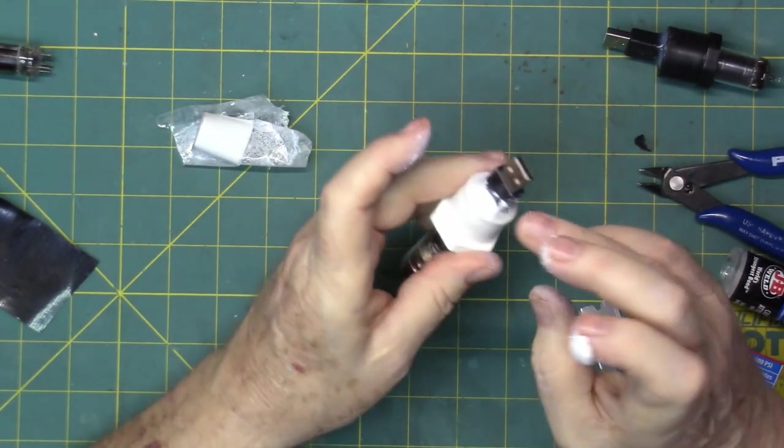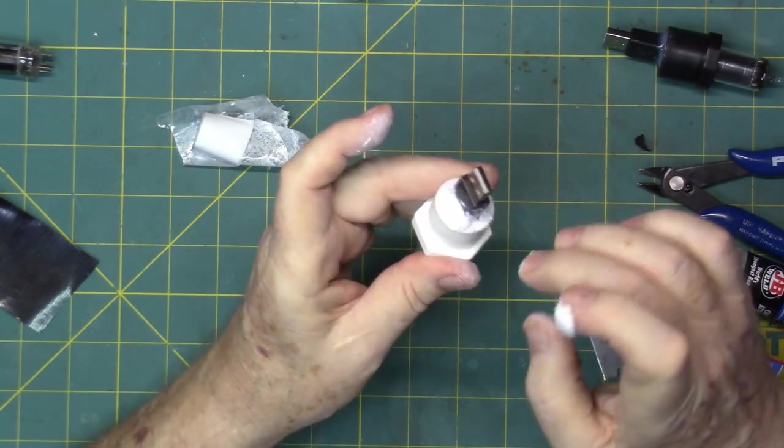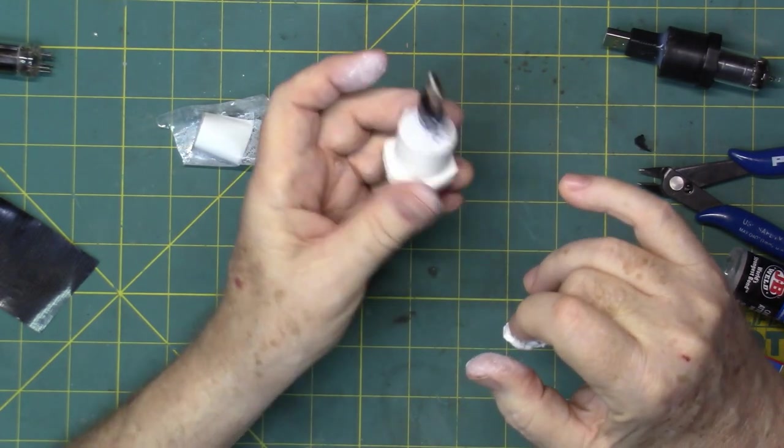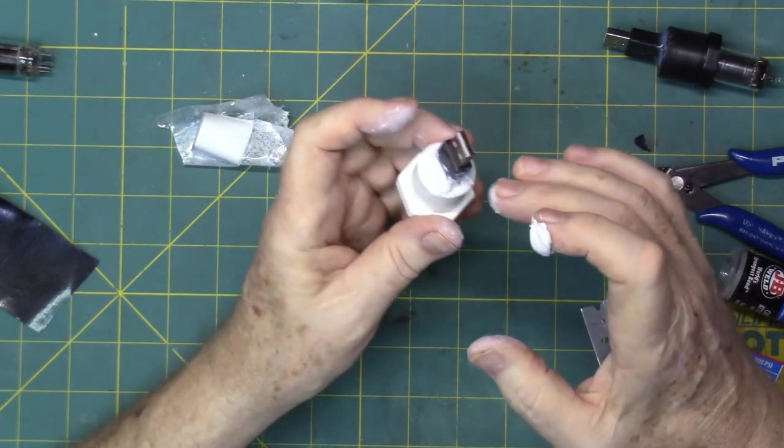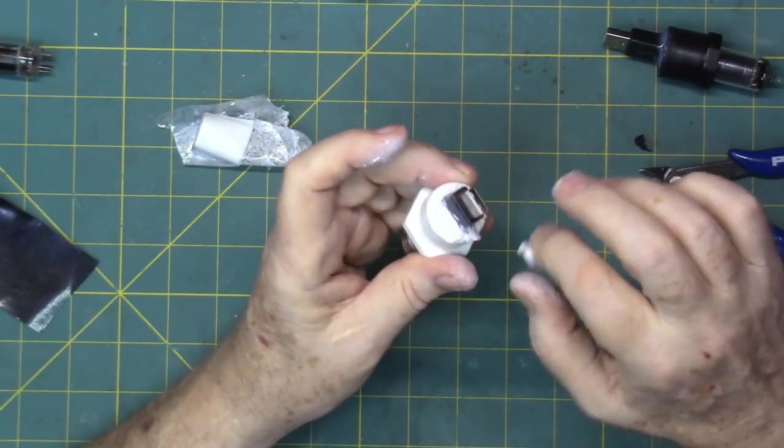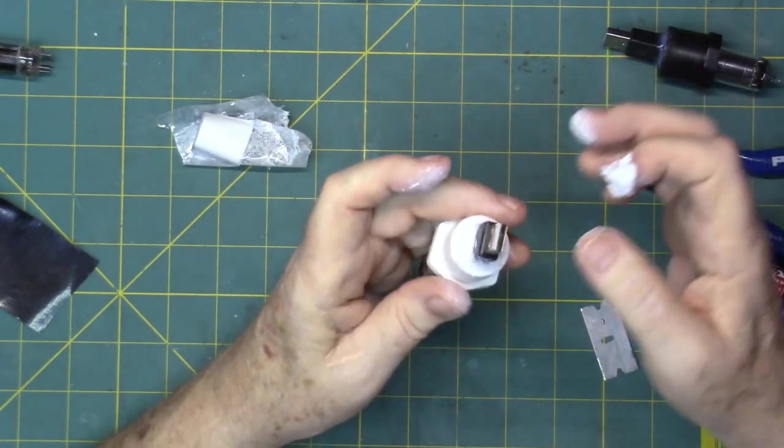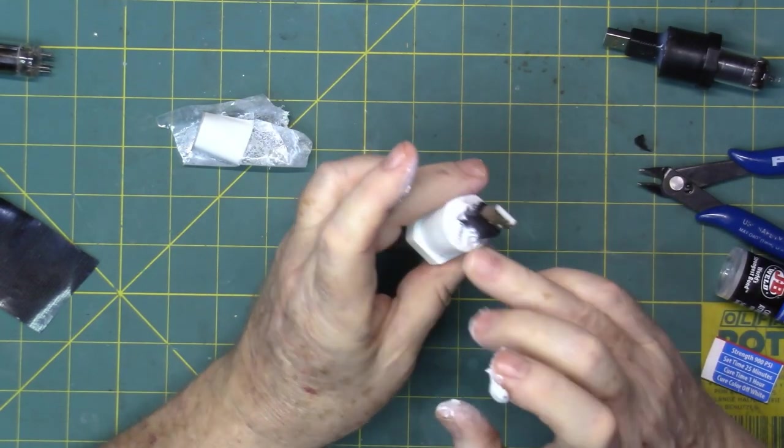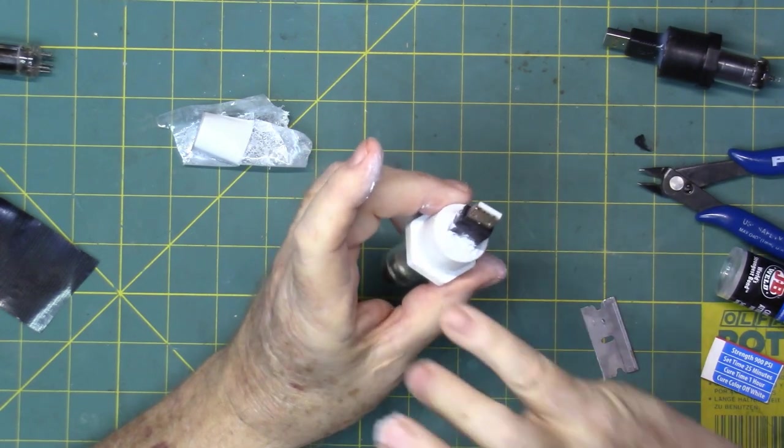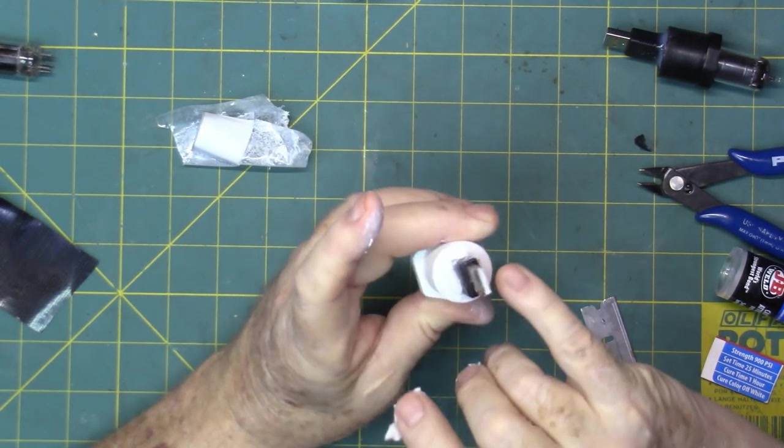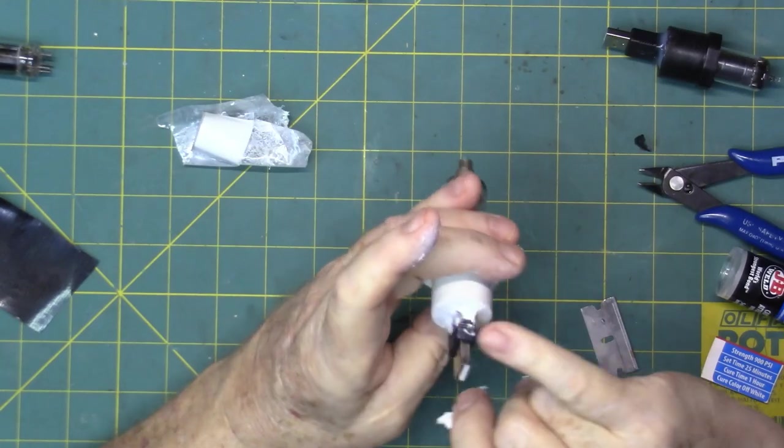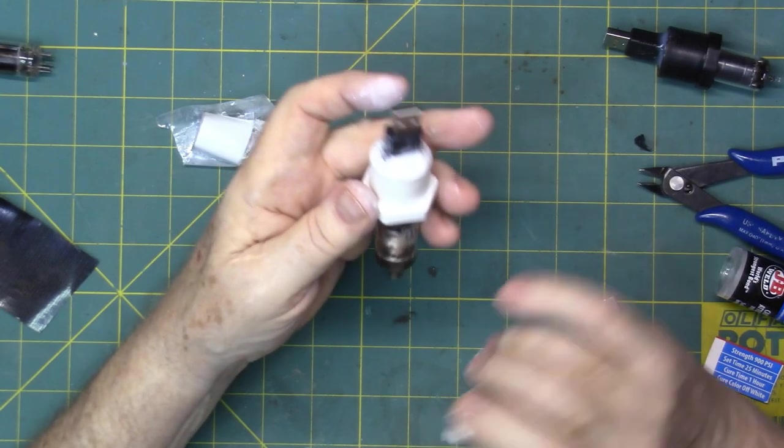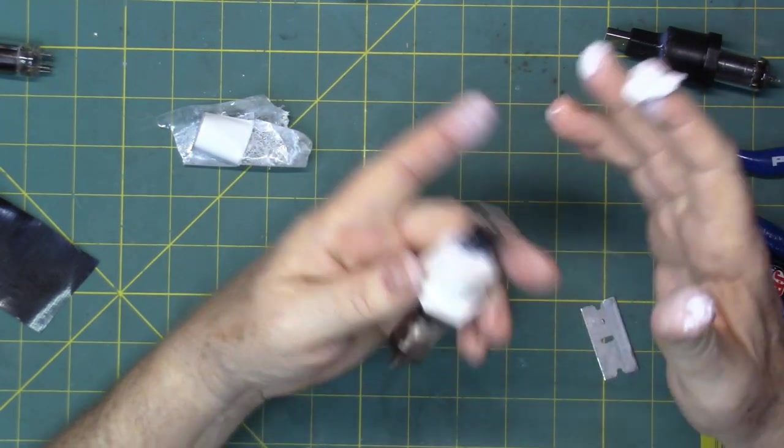It doesn't really matter if you've got a little bit on the plastic, just keep it away from the metal part. And just kind of eyeball it. Keep smoothing it out. If you wet your finger, it smooths out real nice. And we'll let that one sit and harden.